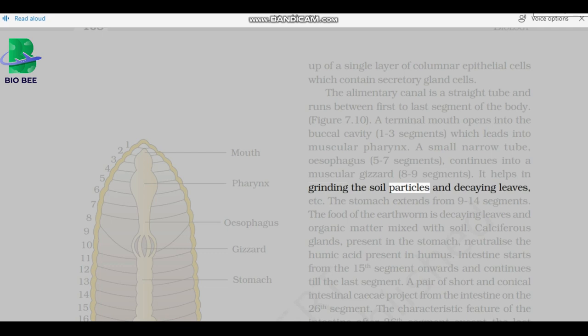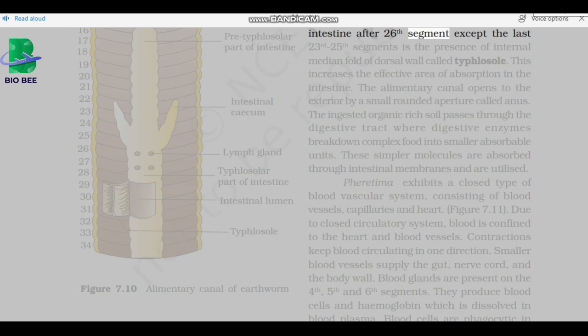The stomach extends from 9 to 14 segments. The food of the earthworm is decaying leaves and organic matter mixed with soil. Calciferous glands, present in the stomach, neutralize the humic acid present in humus. Intestine starts from the fifteenth segment onwards and continues till the last segment. A pair of short and conical intestinal caeca project from the intestine on the twenty-sixth segment. The characteristic feature of the intestine after twenty-sixth segment except the last 23 to 25 segments is the presence of internal median fold of dorsal wall called typhlosole. This increases the effective area of absorption in the intestine.